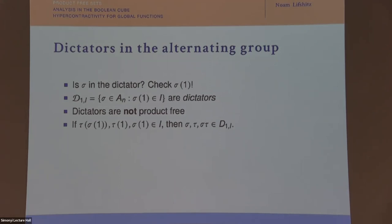What are the dictators in the alternating group? To determine whether a set belongs to the family, we only needed to check one coordinate. Here, if we have a permutation, we decide based on its value on one element — whether it belongs to the dictator. These are the dictators: the set of all permutations sending 1 to a given element. But dictators are not product-free: if two permutations both send 1 to i, their product doesn't send 1 to i.